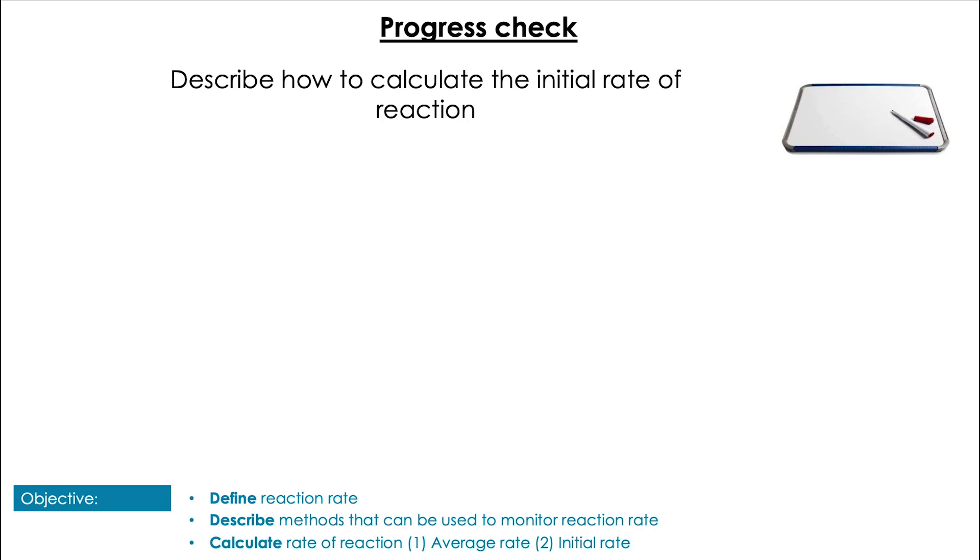Next one, common exam question. Describe how to calculate the initial rate of reaction. Pause the video. Pop them up! Two key components to this answer. You have to find the gradient of the tangent to the curve of the concentration time graph at time equals 0.